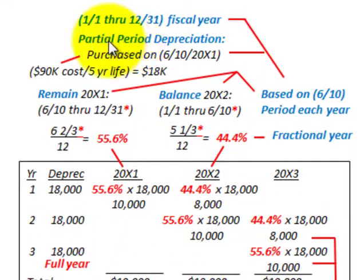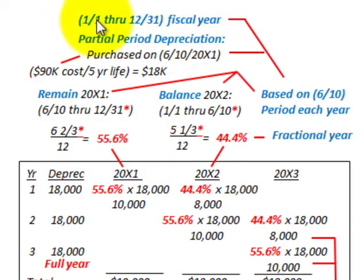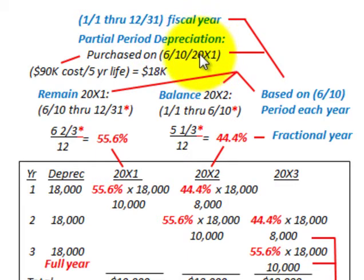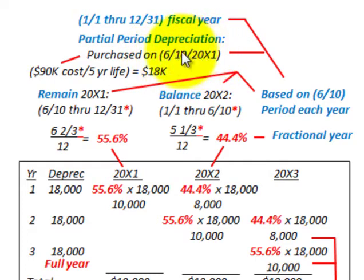What we're going to be looking at here is partial period depreciation allocation and several methods of allocating your depreciation. The company runs its fiscal year from January 1st through December 31st each year, and they typically make a purchase — in this case some equipment on June 10th of 20x1. We need to allocate the depreciation for the year, and we're going to look at how we allocate this partial period depreciation in one-year increments starting on June 10th each year.